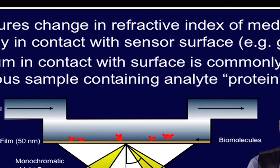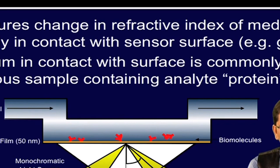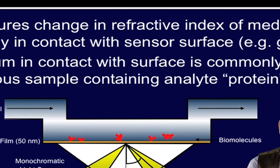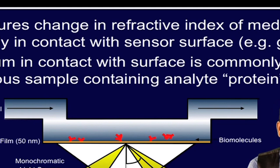SPR is a surface-sensitive spectroscopic method which measures the changes in the refractive index of the medium directly in contact with the sensitive surface, and the commonly employed metal is gold. As shown in the slide, there is a prism, a light source, an antibody immobilized on the gold surface, and a flow cell from which we can inject the target proteins to be studied. The medium in contact with the surface is commonly an aqueous sample containing the analyte protein.